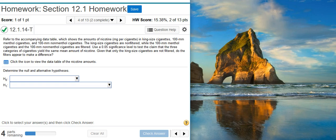Refer to the accompanying data table, which shows the amounts of nicotine in milligrams per cigarette of king-size cigarettes, 100-millimeter menthol cigarettes, and 100-millimeter non-menthol cigarettes. The king-size cigarettes are non-filtered, while the 100-millimeter menthol cigarettes and the 100-millimeter non-menthol cigarettes are filtered. Use a 5% significance level to test the claim that the three categories of cigarettes yield the same mean amount of nicotine. Given that only the king-size cigarettes are not filtered, do the filters appear to make a difference?